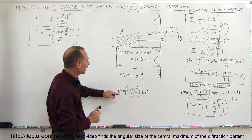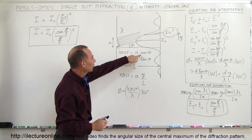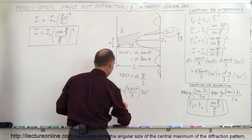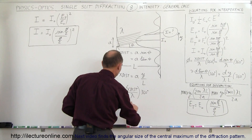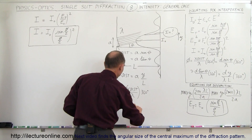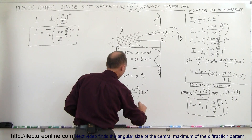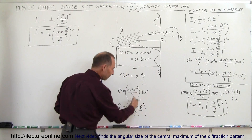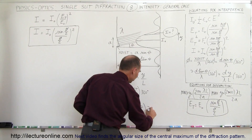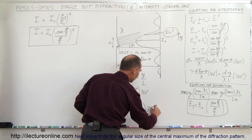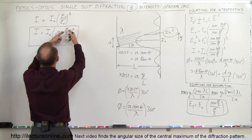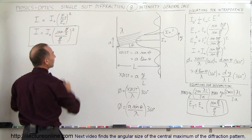We can write the extra distance in terms of A sine theta, so the phase angle phi is equal to A sine theta divided by lambda — this will be a fraction of the wavelength — times 360 degrees. We can then take that value and plug it into the intensity equation.